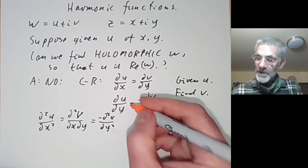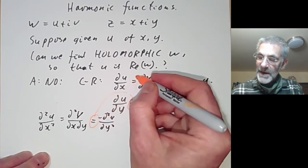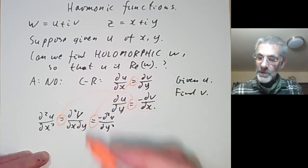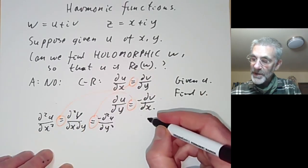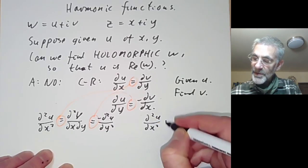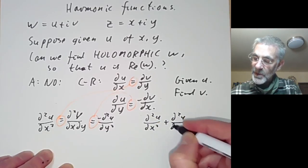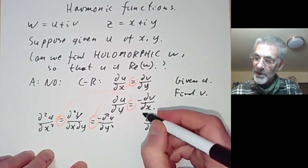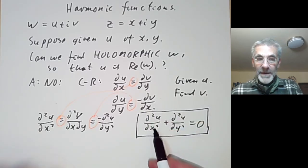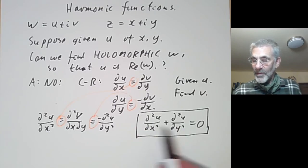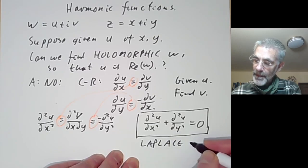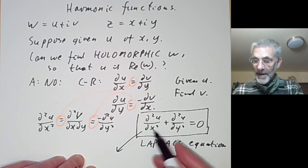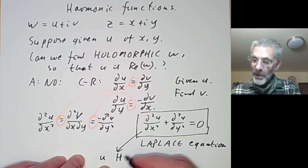This is also equal to minus d²u/dy², because we take the second equation and differentiate with respect to y. Combining these gives the non-trivial condition: d²u/dx² plus d²u/dy² must equal zero. This is the most basic of all partial differential equations — it's called the Laplace equation.